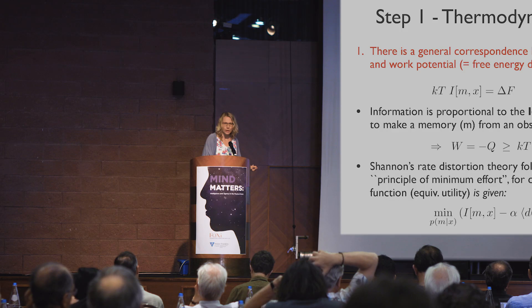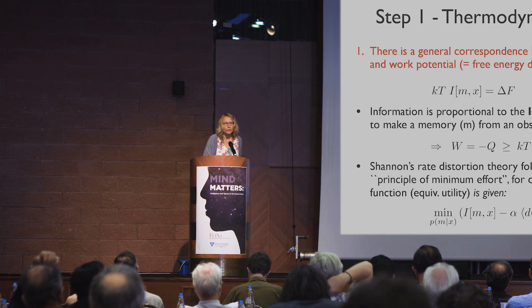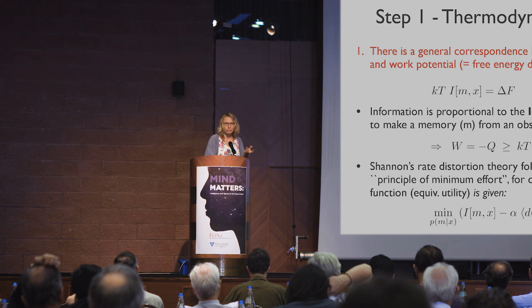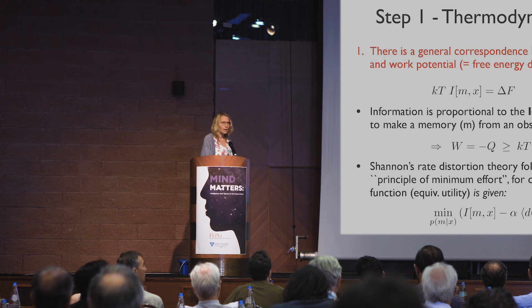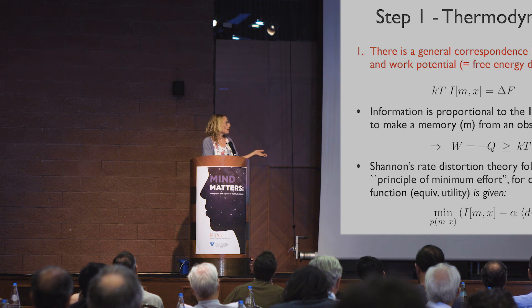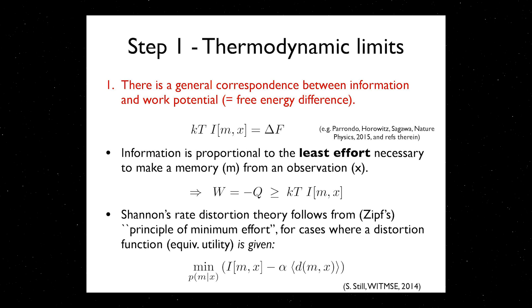With that argument, you can say that Shannon's rate distortion theory — which gives a constructive way of making a lossy compression of your data — can be motivated from a principle of least effort. You give me a distortion function; if I'm willing to live with that distortion, which can be translated into a utility, then I give you back a representation of the data that captures the original data to the accuracy specified by your distortion function, and that I can make with the least amount of effort.